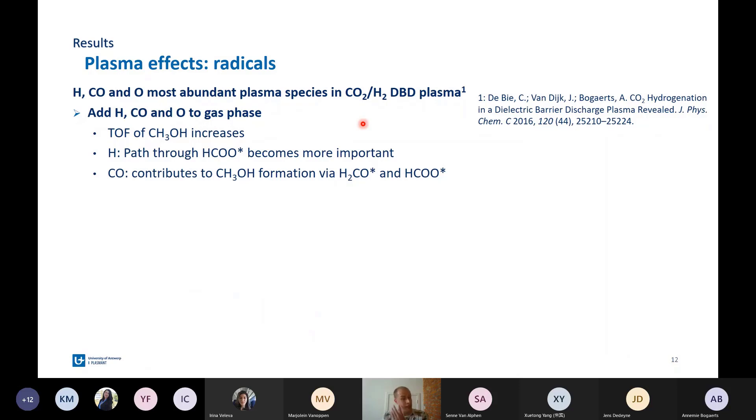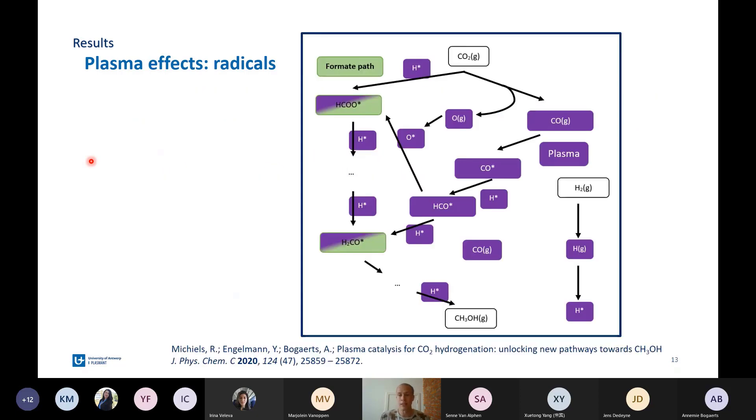We went a little bit further, and we analyzed the effect of the separate species. First, we look at the effect of hydrogen. This hydrogen increases the hydrogen coverage, and this makes the formate pathway more important. There's also this contribution to CO via two intermediates. You can see now that the hydrogen is now split into hydrogen atoms in the plasma, which adsorb and increase the hydrogen coverage. This makes the green pathway more important. The turnover of the green pathway towards methanol goes up. Then, there's also the contribution of CO formed in the plasma. The CO adsorbs and can then react via either formate or formaldehyde to methanol.